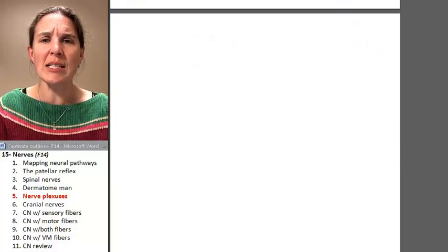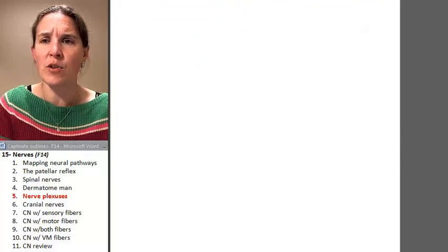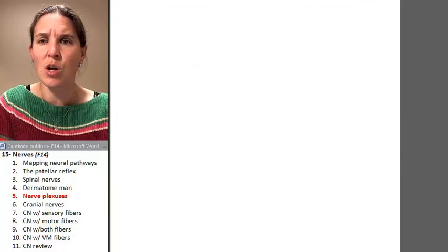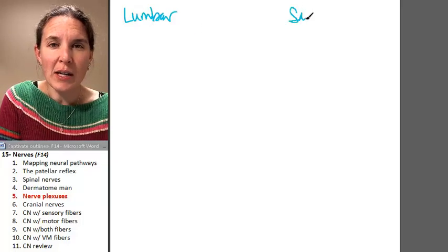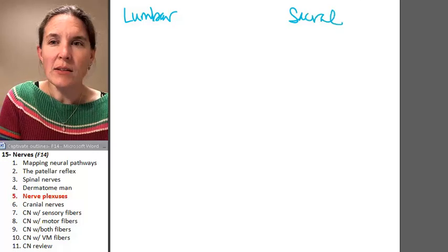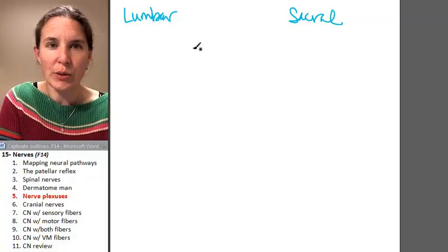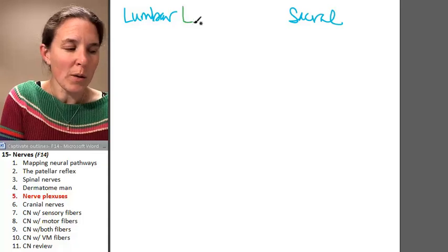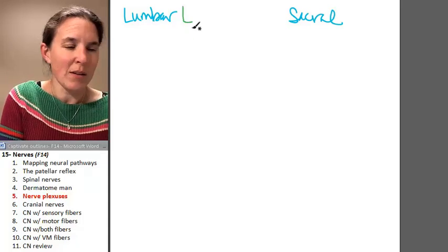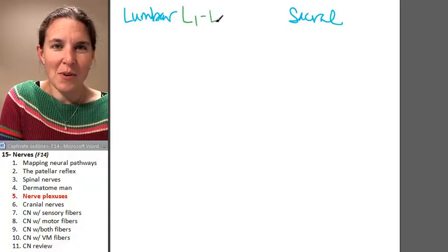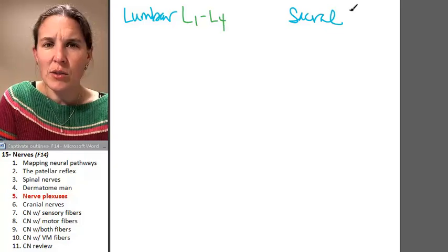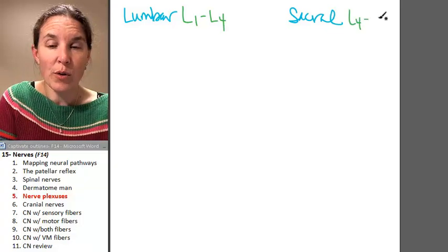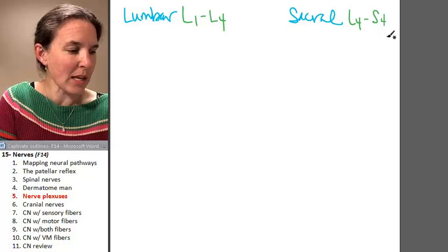We have two other plexuses that we have nerves to know from. We have the lumbar plexus and we have the sacral plexus. And the lumbar plexus includes L1 through L4 and the sacral plexus includes L4 through S4. That's easy to remember.